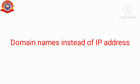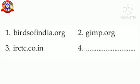It is not easy to remember the IP addresses of all the websites. In order to overcome this difficulty, these IP addresses are connected to names that we can easily remember. These names are called domain names, and it is this domain name that we enter on the address bar of the web browser while searching something. Some examples of domain names are birdsofIndia.org, jimp.org, irctc.co.in, and google.com.